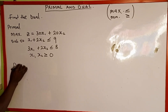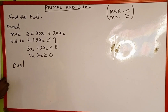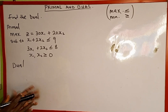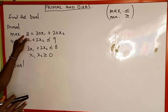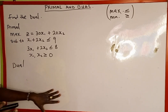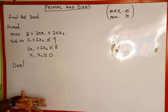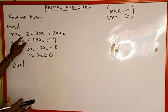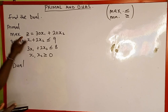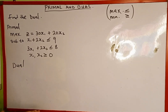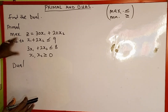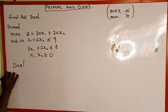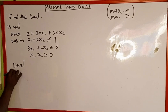To find the duality, we write 'dual' here. The next thing to know: if the primal is in the maximum form, then the duality is going to be minimum. Similarly, if the primal is in the minimum form, then the dual is going to be maximum. Since this problem is in the maximum form, our duality is going to be minimum.